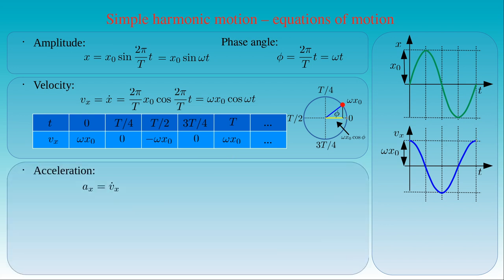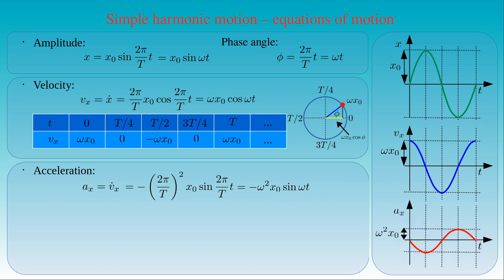Similarly, we can determine the acceleration of the oscillating body by differentiating the velocity with respect to time t. We obtain minus the square of 2π over period T, times x0 times sine of 2π over period times t, which can be written as minus ω² times x0 times sine ωt. The plot of acceleration versus time is shifted with 180 degrees in the negative direction of the time axis with respect to the graph of amplitude versus time. Its maximal value is given by ω² times x0. The acceleration can also be represented with a vector rotating around a circle of radius ω² times x0, and the acceleration is given by minus the horizontal projection of the vector, equal to minus ω²x0 times sine φ, where φ equals ωt.